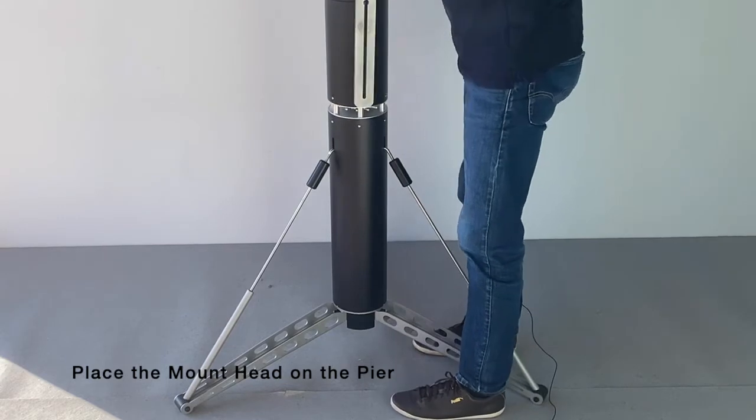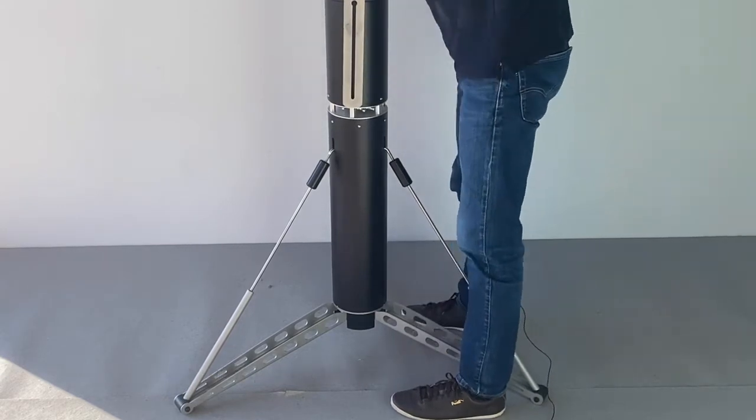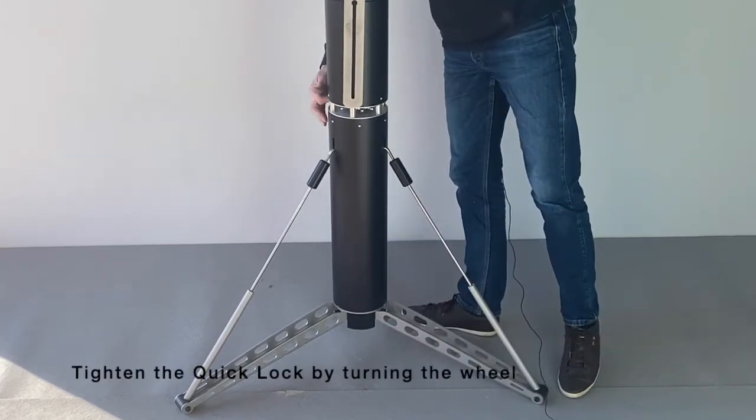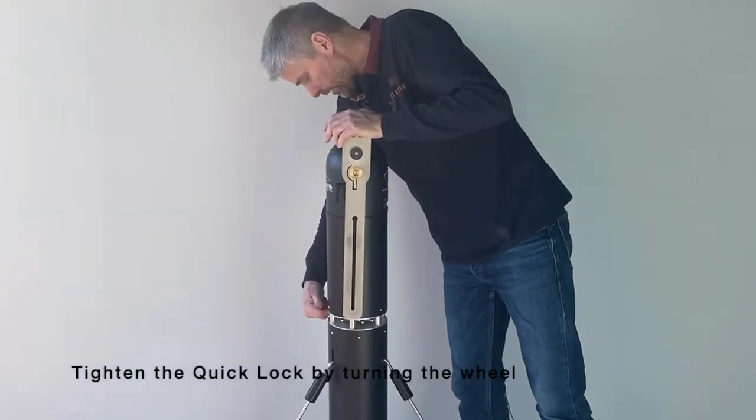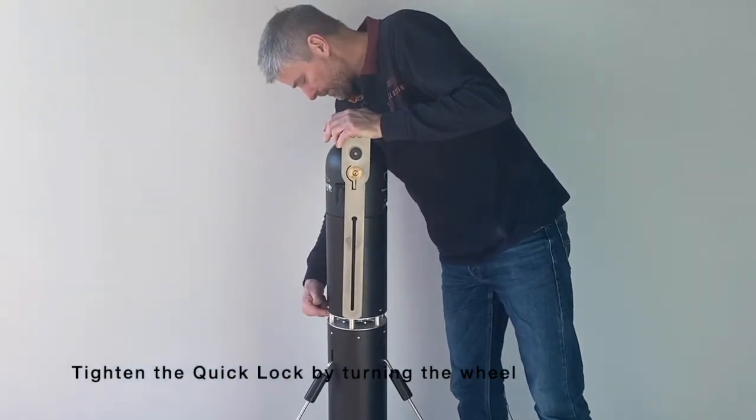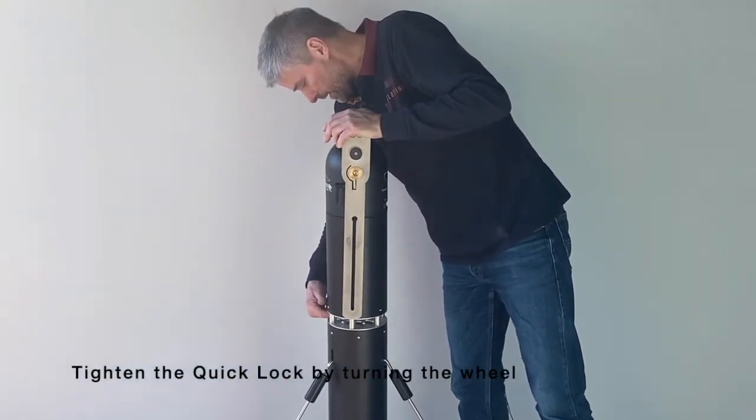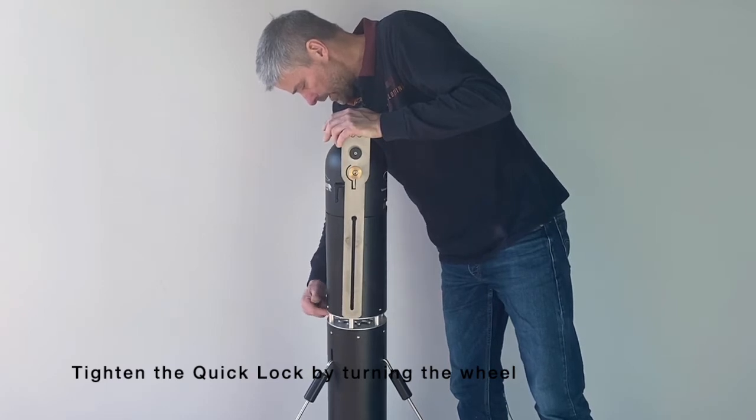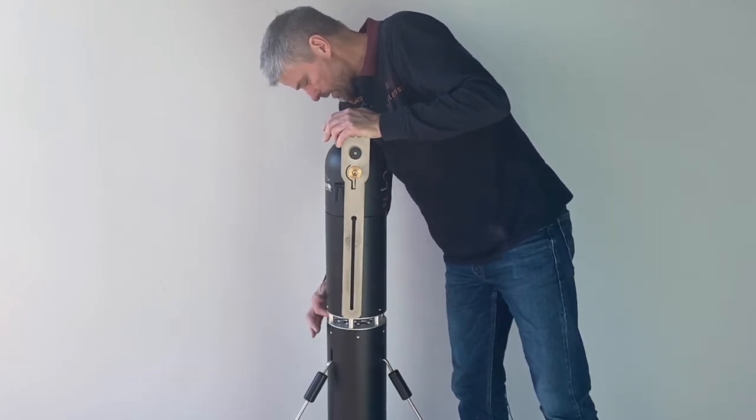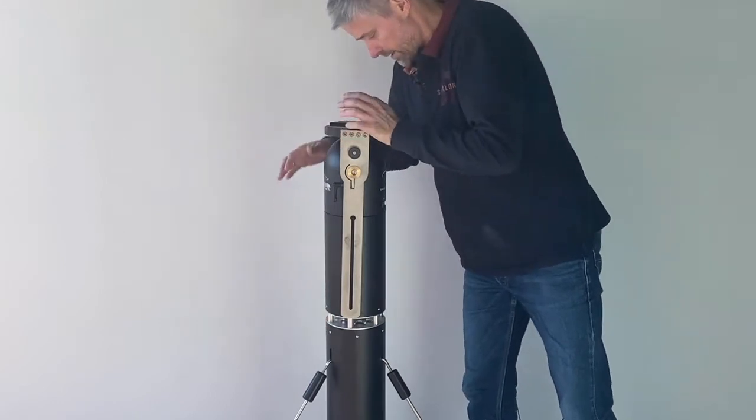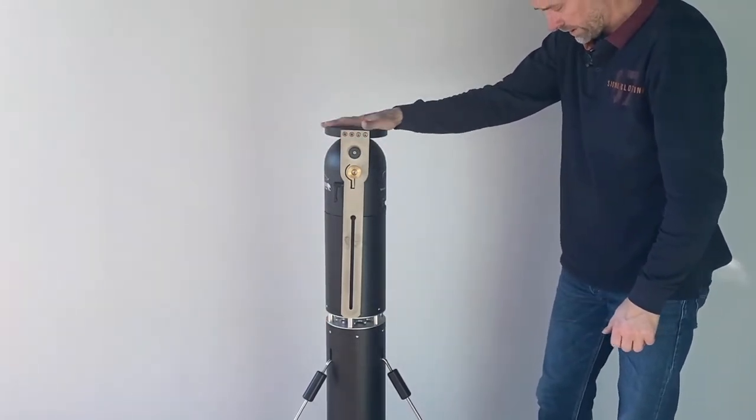Place the mount head on top of the pier. It will stand stable right away and you can lock the handle with a finger. Don't over tighten the lock handle. Just tighten it enough so that you feel the mount head sits firmly on the pier.